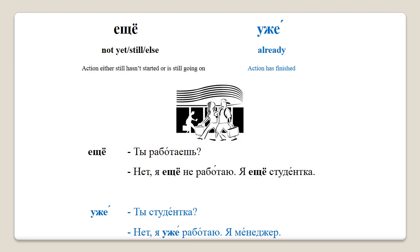Let's have a look at the second dialogue: Ты студентка? Нет, я уже работаю. Я менеджер. — Are you a student? No, I'm already working. I'm a manager. Еще can also be used with question tags such as что (what) to say 'what else' — что еще.